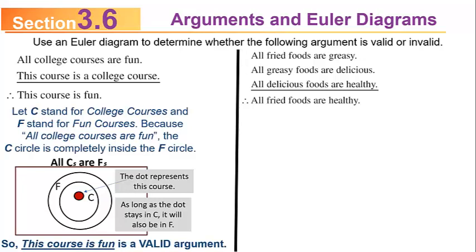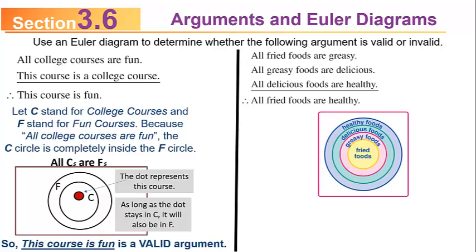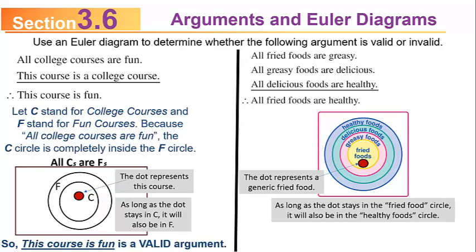Drawing the Euler diagram: all fried foods are greasy, so the fried food circle is completely inside the greasy food circle. All greasy foods are delicious, so the greasy food circle is completely inside the delicious food circle, which in turn is inside the healthy food circle. A dot representing a generic fried food will also be inside the healthy food circle. So the argument is completely valid — as long as you accept all the premises.